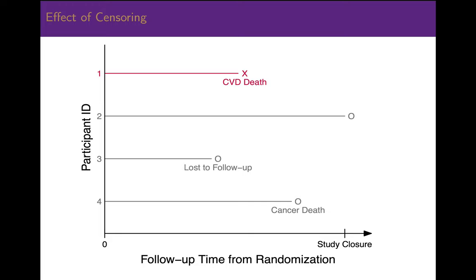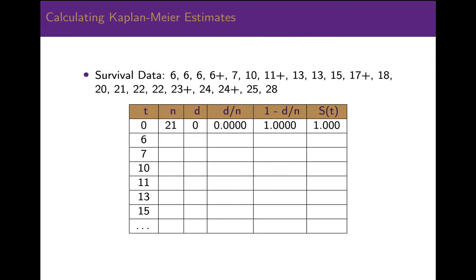Let's work through an example to see how this method works. Consider the survival data shown above, where each time indicated shows an event, except the times with a plus sign, which indicate times where data were censored. Let's assume that the event of interest is death due to some disease, and that the survival times are measured in years after disease diagnosis. The data indicate that 3 people died at year 6 and 1 person was censored — lost to follow-up, died of something else, or was administratively censored. 1 person died at year 7, 1 person died at year 10, 1 person survived to year 11 but was then censored, and so on.